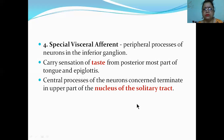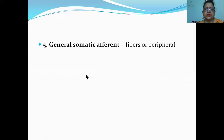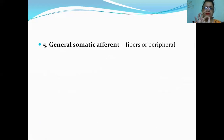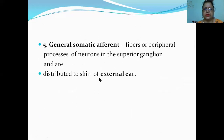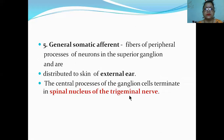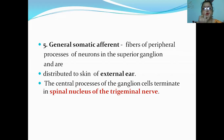This special visceral afferent will also go to the nucleus of solitary tract. So all visceral afferents, whether general or special, relate to the nucleus of solitary tract. So how many nuclei have you learned? Three: nucleus ambiguus, dorsal nucleus of vagus, and nucleus of solitary tract. Now this is the last one.